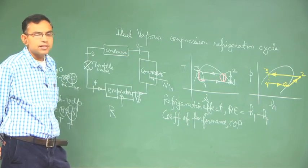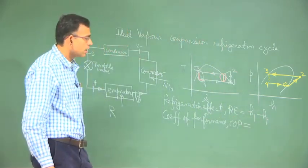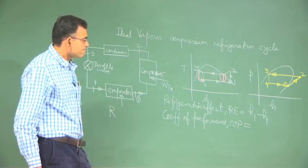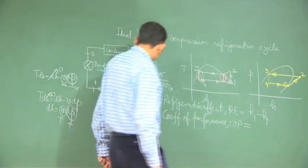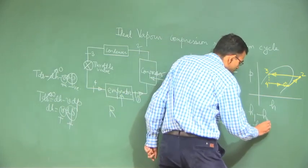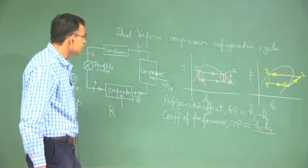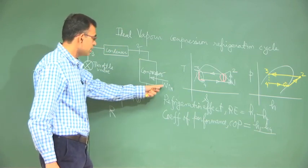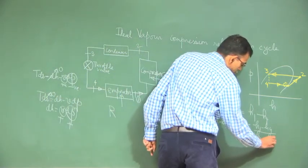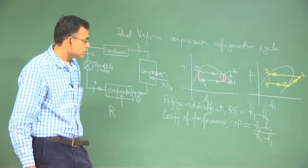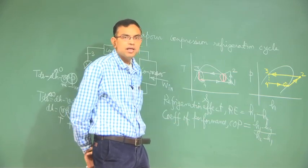Regarding performance parameters: one is the refrigeration effect. The other is the coefficient of performance (COP). The desired output is H1 minus H4 — the refrigeration effect — and the input is the work input to the compressor, which is H2 minus H1. Higher the COP, better the performance of the refrigeration cycle.